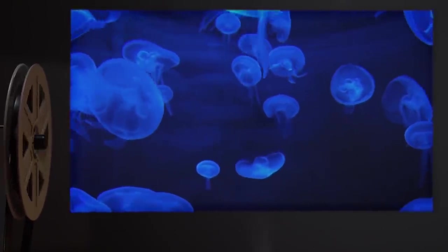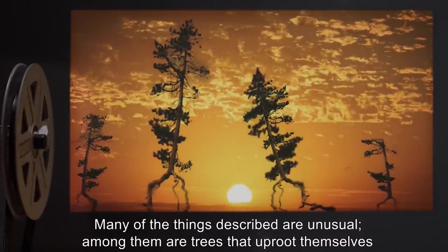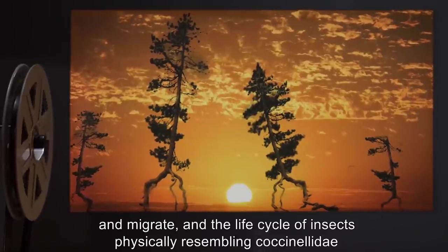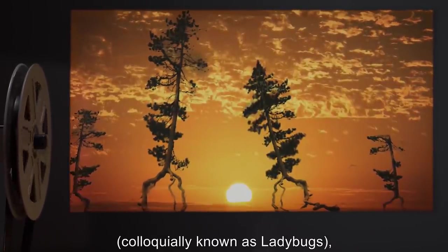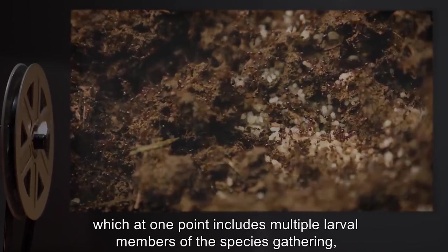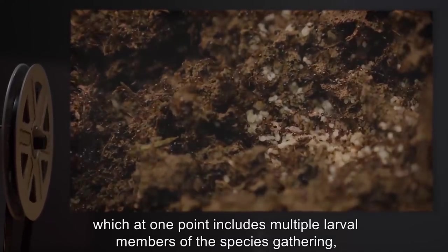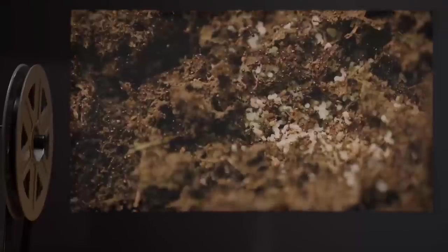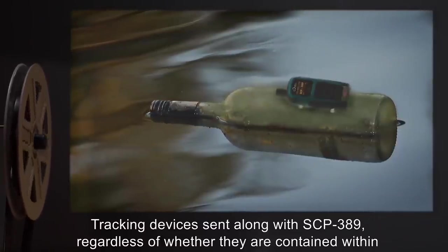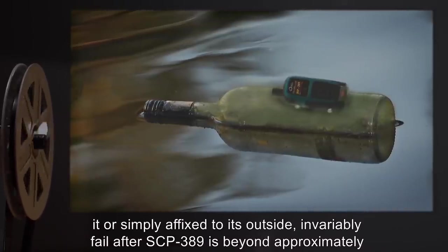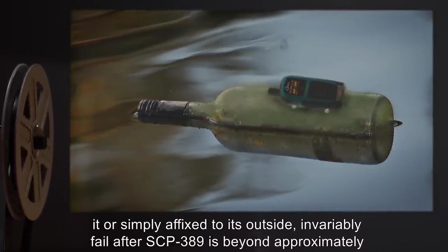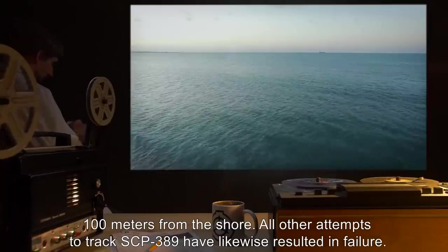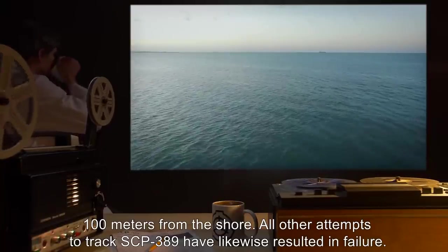Gedril will describe the area surrounding her home—wildlife, food, culture, customs—and apparently anything not relating specifically to herself readily and in detail when possible, though her knowledge of many things is limited. Many of the things described are unusual. Among them are trees that uproot themselves and migrate, and the life cycle of insects physically resembling Coccinellidae (colloquially known as ladybugs), which at one point includes multiple larval members of the species gathering, spontaneously liquefying into a single mass, then reforming again as adults. Tracking devices sent along with SCP-389, regardless of whether they are contained within it or simply affixed to its outside, invariably fail after SCP-389 is beyond approximately 100 meters from the shore. All other attempts to track SCP-389 have likewise resulted in failure.